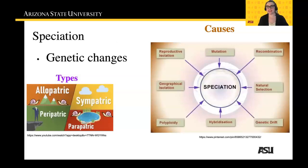Speciation is a congregation of accumulated genetic changes over time. There are many different things that can cause speciation. The two main types are allopatric and sympatric, and these changes accumulate through various ways.